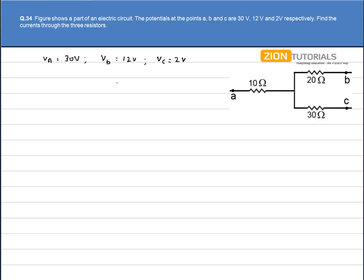Now we have to calculate the current through the three resistors. Let the potential at this junction be X. Let the currents be I1, I2, and I3.